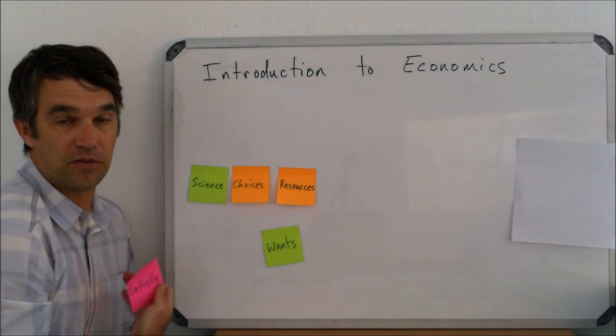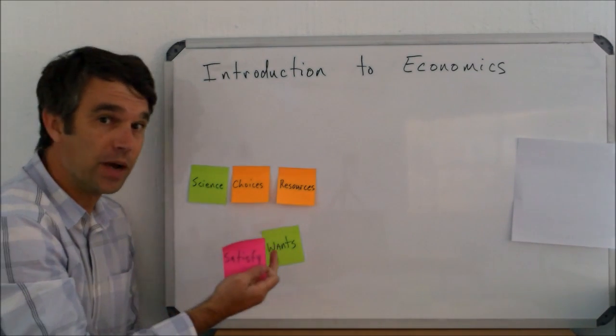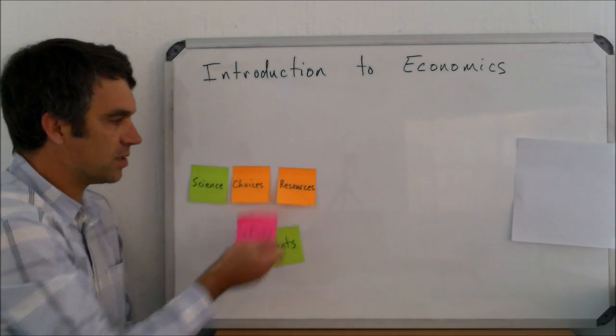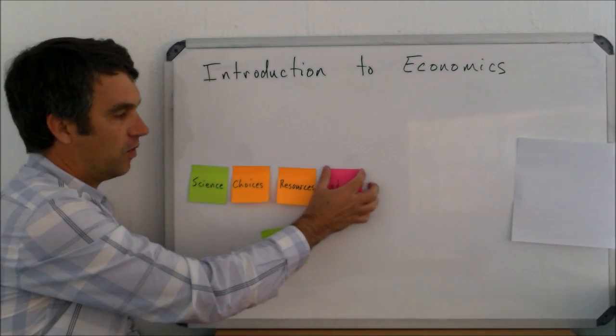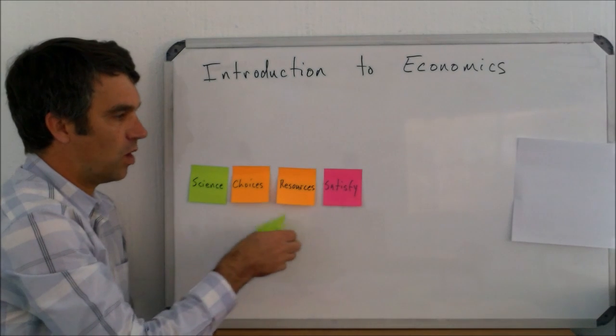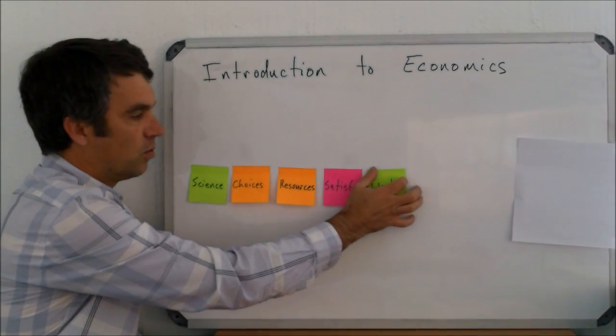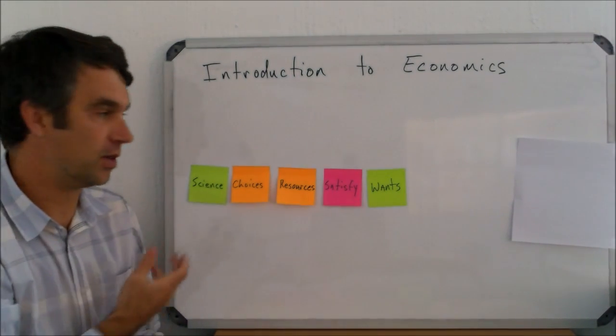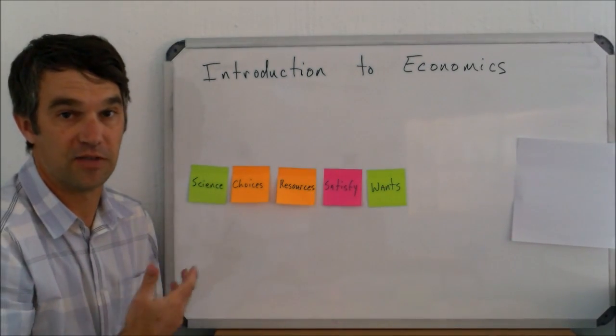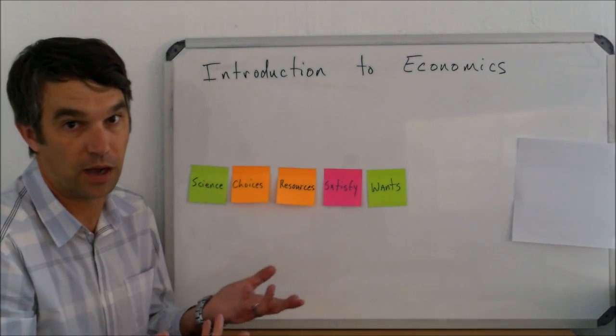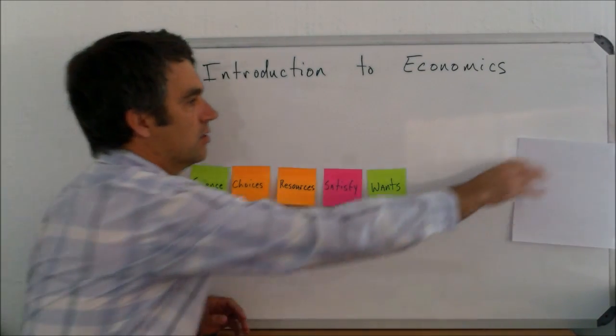but it can also mean resources that an individual has like time and money. When they make choices about what they're going to do with their resources, they're going to do that, hopefully, to satisfy various wants or needs. We don't really distinguish too much between the two in the definition, to satisfy the various wants and needs that an individual or government or business might have.